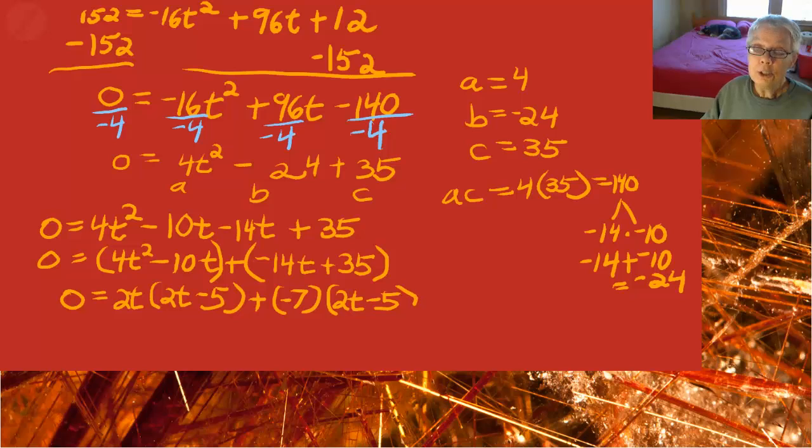So 0 will equal 2t minus 5 times 2t minus 7. Those are our factors.